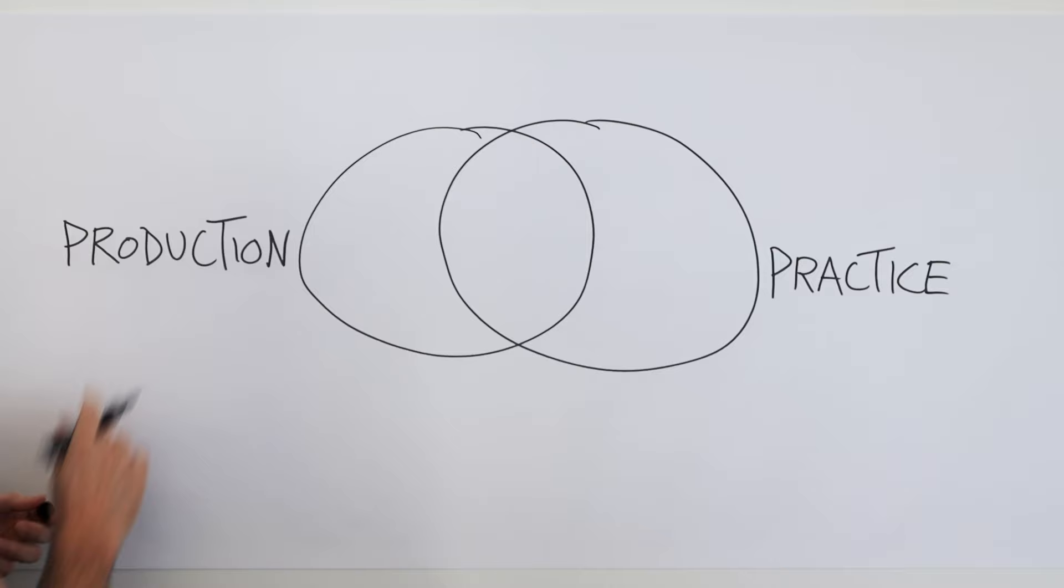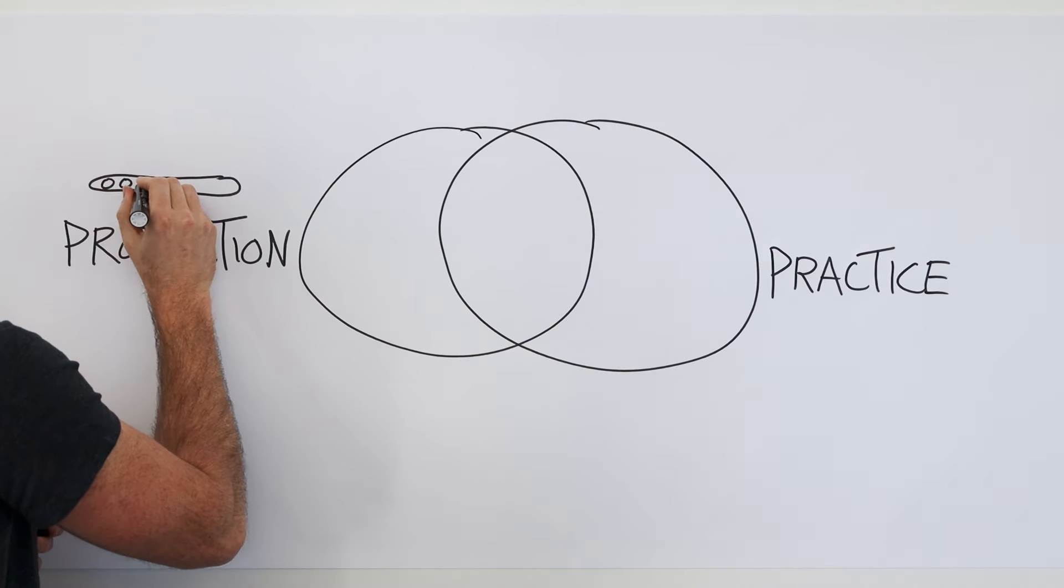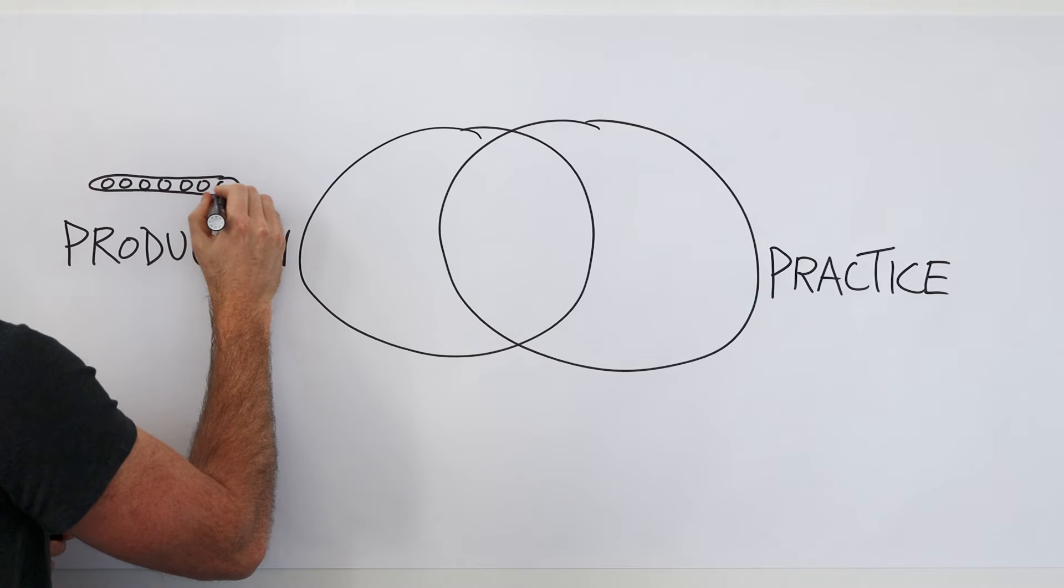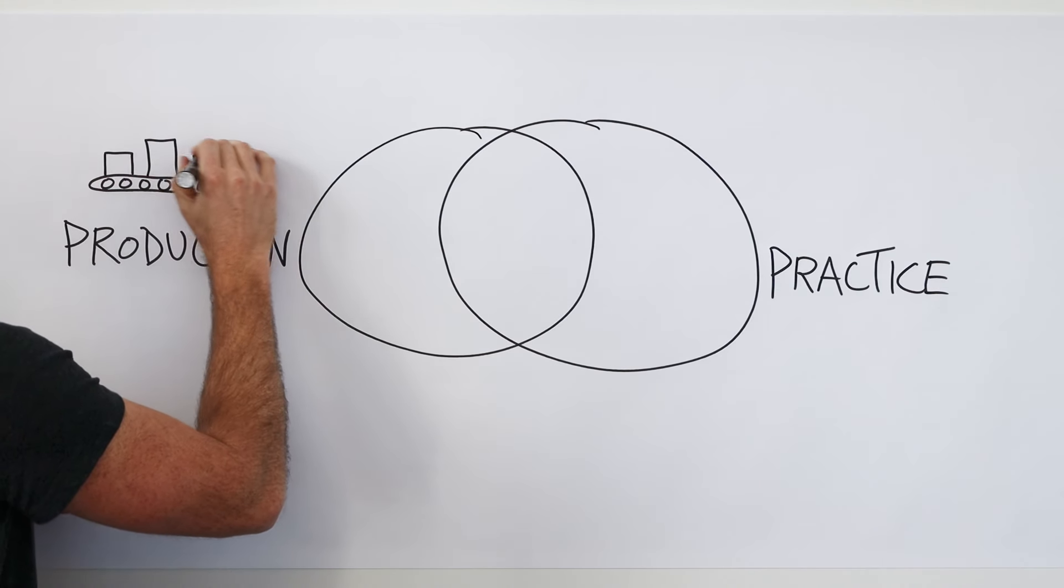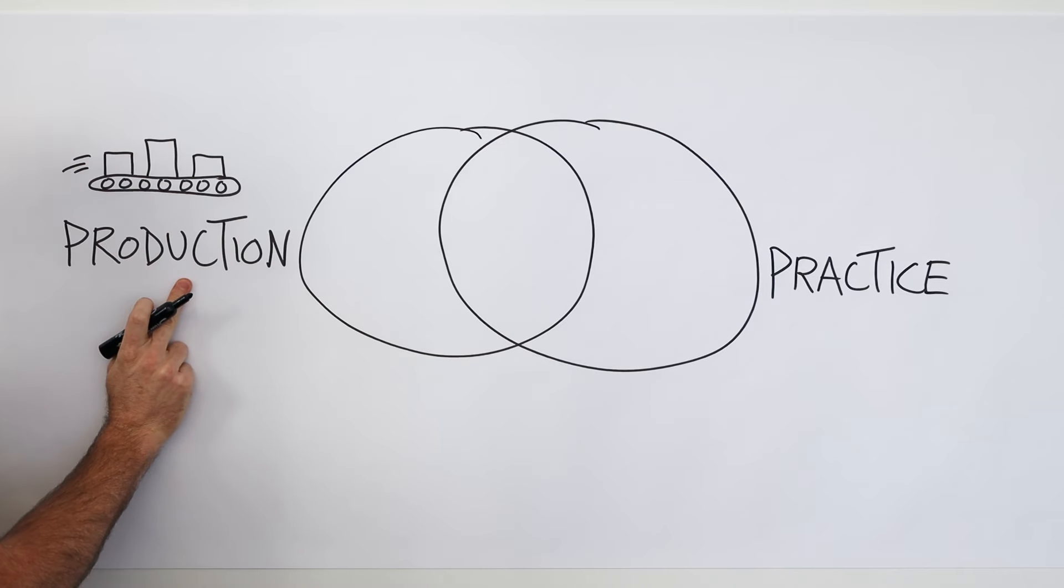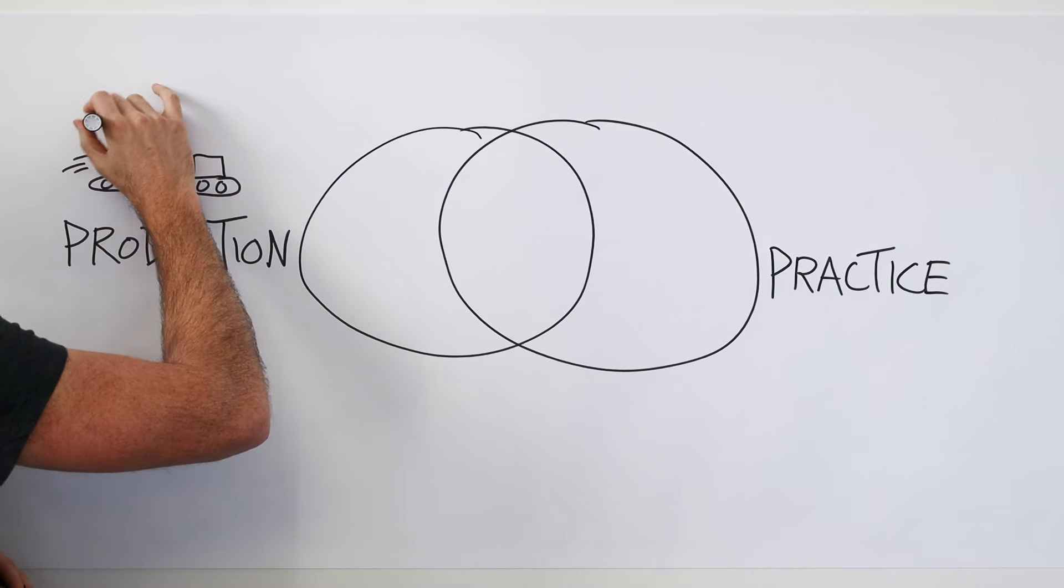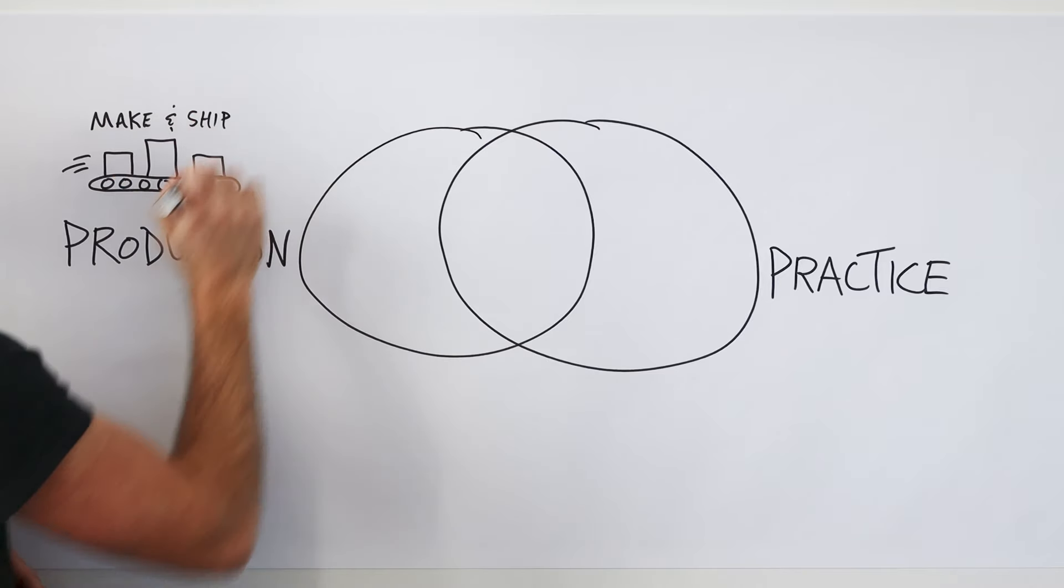When you're in production mode, what you're focused on is making and shipping things. So you've got a little bit of a conveyor belt feeling where you're in this mode of just keeping up with the work that's in front of you. You've got plenty on your plate, and your focus is on that making and shipping of creative work.